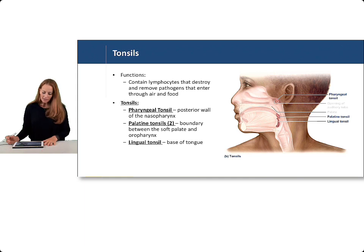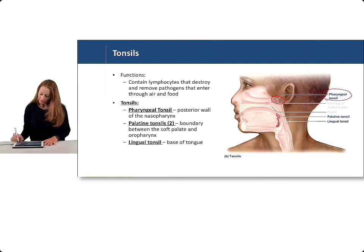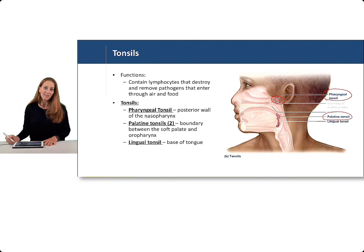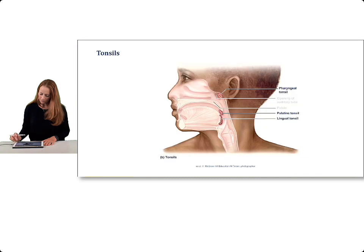Next we have tonsils. Tonsils contain lymphocytes that destroy and remove pathogens that enter through the air and through food. We have three major regions where we find the tonsils. In the posterior wall of the nasopharynx we have the pharyngeal tonsil. On either side of the palate are the palatine tonsils — right and left. And on the back of the tongue is the lingual tonsil.